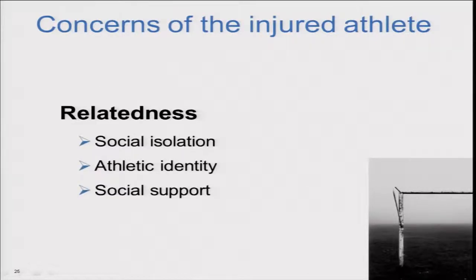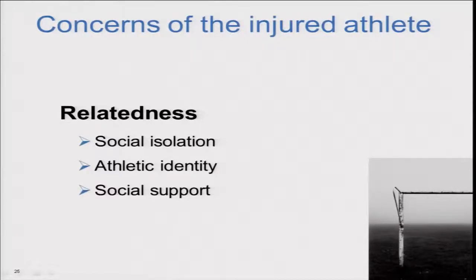The second theme is relatedness — the athlete's perception of feeling part of the team environment and social network. They talk about social isolation when injured, and particularly young athletes have concerns about losing their sense of being an athlete, their athletic identity. Athletes also talk about lacking the social support they feel they need during rehabilitation and return to play.